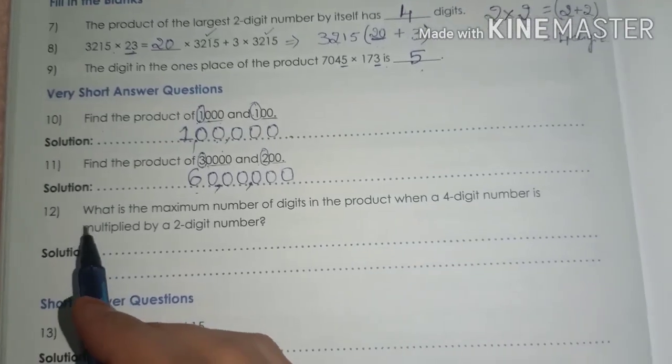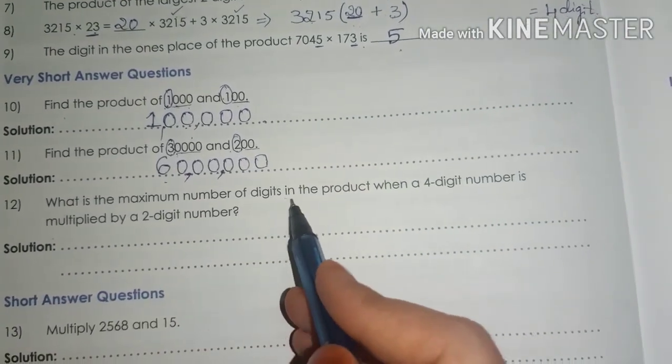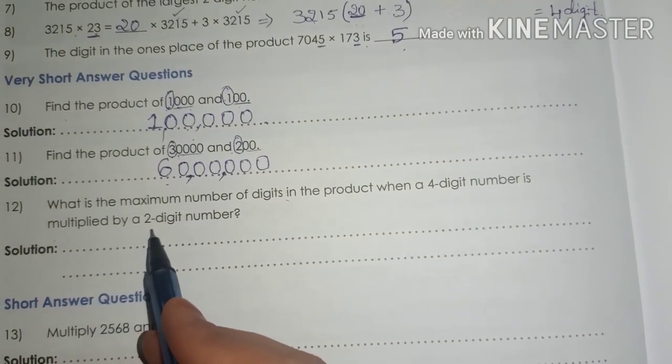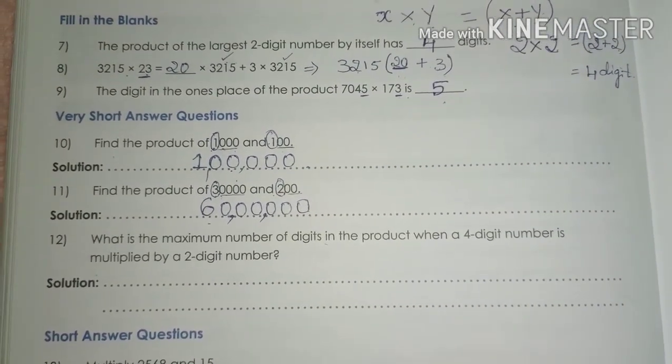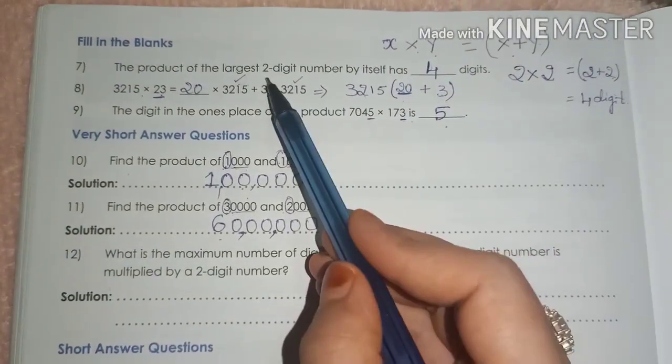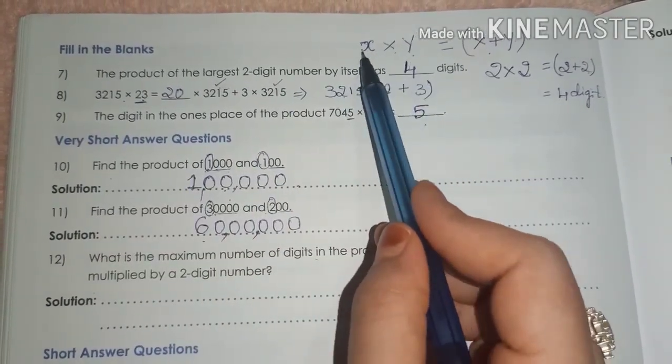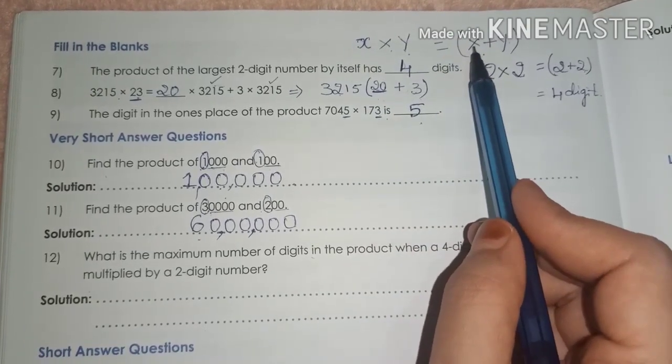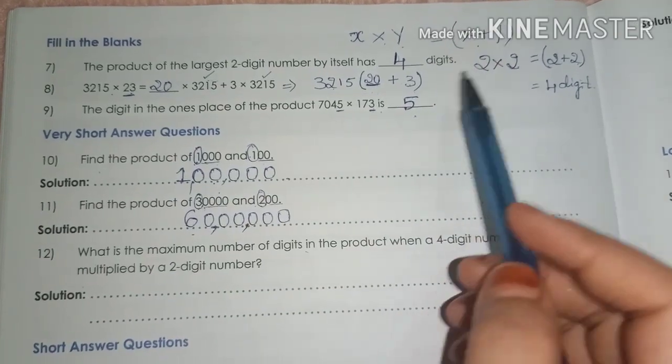Next, come to question number 12. What is the maximum number of digits in the product when a 4 digit number is multiplied by a 2 digit number? Again, this question is similar to question number 4 and question number 7. Here we have solved that when 2 digits, digit X and digit Y is multiplied, the product is X plus Y.